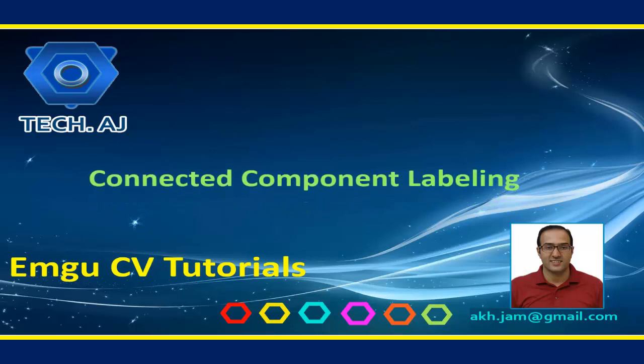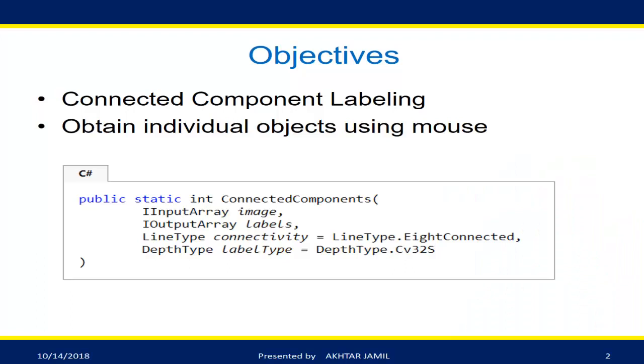Hello and welcome to this new tutorial on EmguCV. Today I am going to show you how we can perform connected component labeling on a binary image in EmguCV. To get the connected components I'll be using the function ConnectedComponents. I will also show you how we can segment individual objects on mouse click.